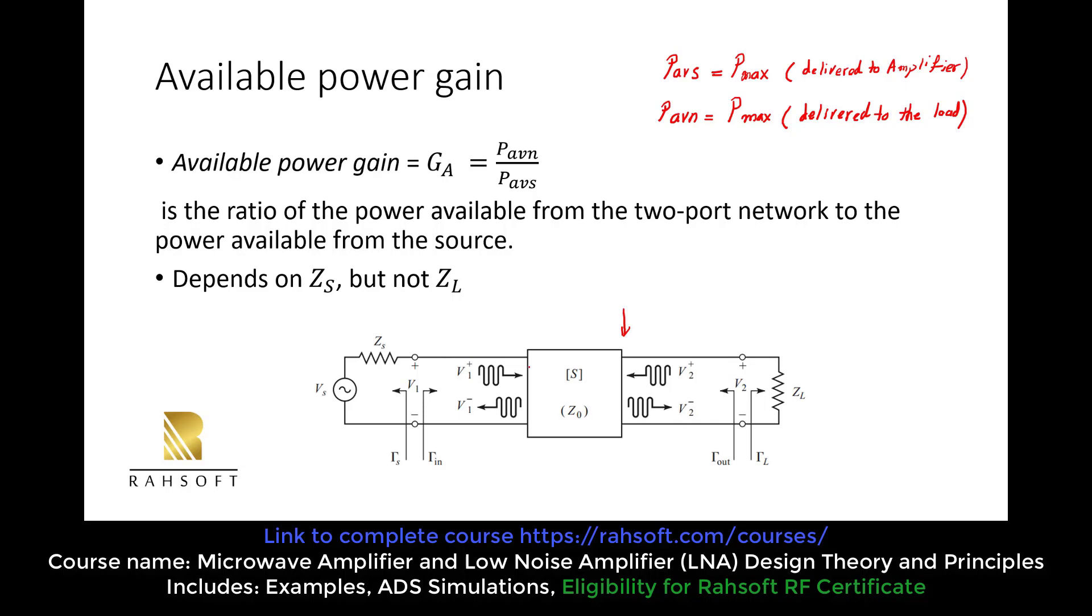And now for this one, we say it depends on ZS but not ZL. So again, in order to understand this, you can check the power flow this time. We go from this point. So we have a PAVS here. And we go up to the end of this two-port network. So this is PAVN.